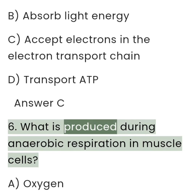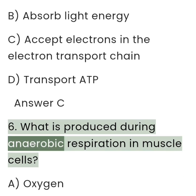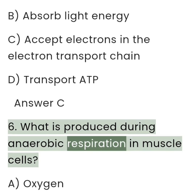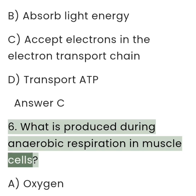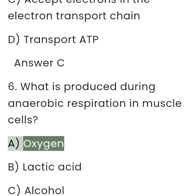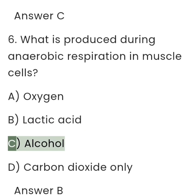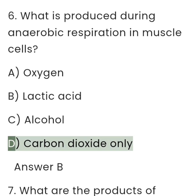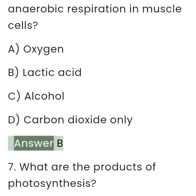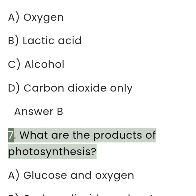6. What is produced during anaerobic respiration in muscle cells? A. Oxygen. B. Lactic acid. C. Alcohol. D. Carbon dioxide only. Answer: B.